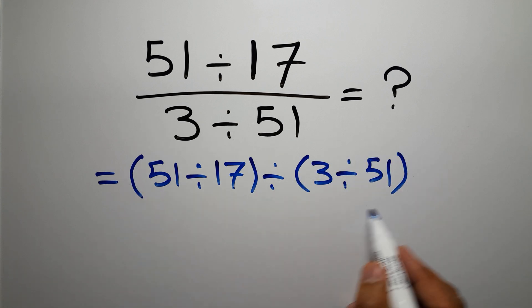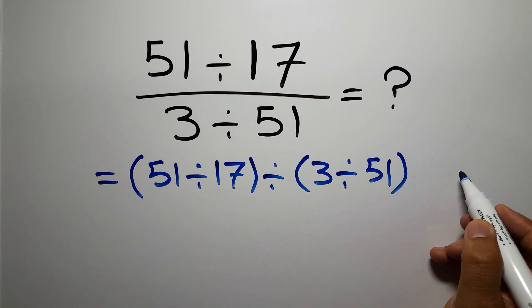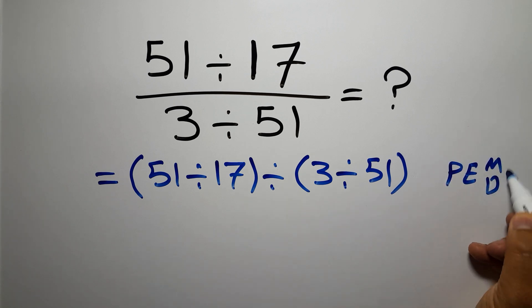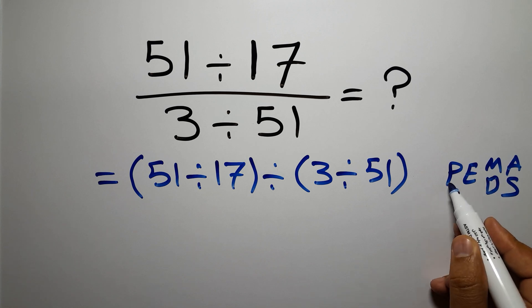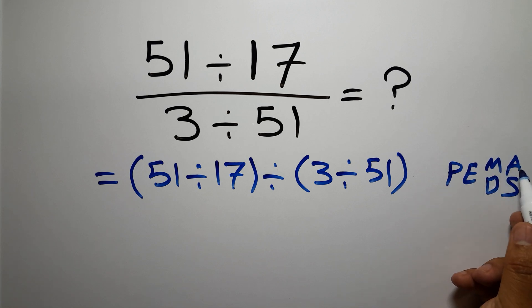According to the order of operations, which is PEMDAS, P stands for parentheses, E stands for exponents, M and D stands for multiplication and division, and A and S stands for addition and subtraction.